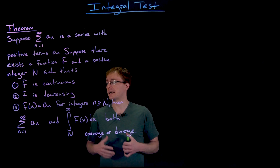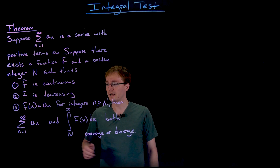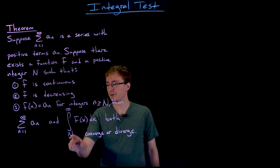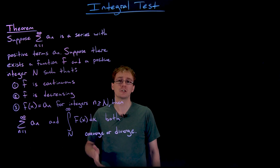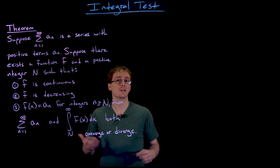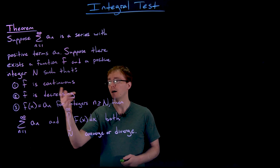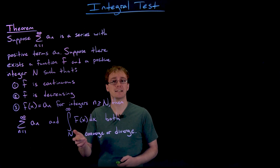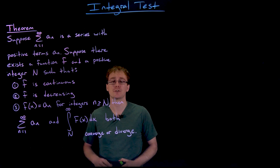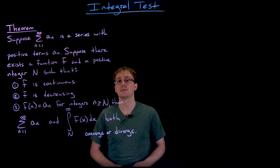Then the integral test says that the series, the sum from n equals one to infinity of a sub n, and the improper integral from capital N to infinity of f of x, are going to converge or diverge together. So the integral test allows us to: if the function describing the terms in our series is positive, decreasing, and integrable, compute that integral — and if it converges, so does our series; if it diverges, so does our series.